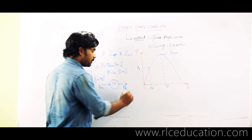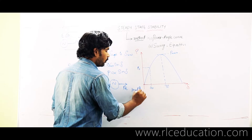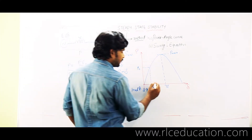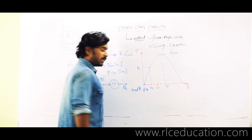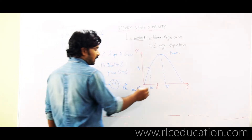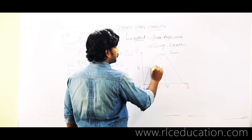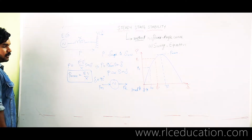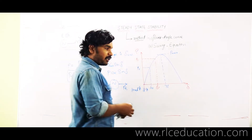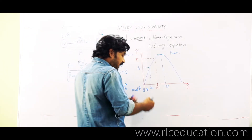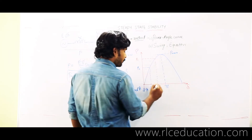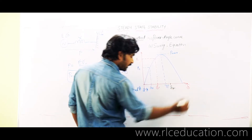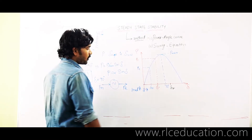Now let's say I am increasing my load. If I am increasing my load, delta also rises. Corresponding to the new load, my increased delta is somewhere over here — say this is delta 1. Delta 1 is the delta corresponding to the new load. Now I want to further increase the load, so I am increasing the load further, and corresponding to the new increased load, let's say my delta is delta 2.